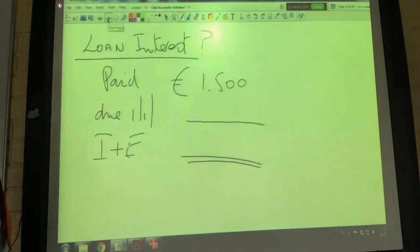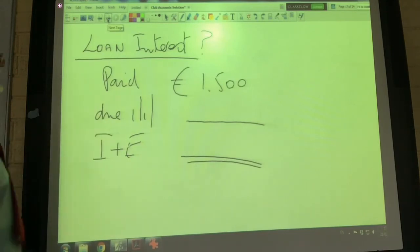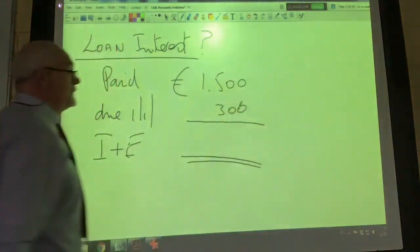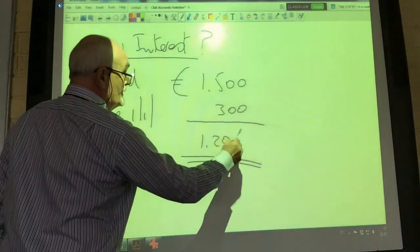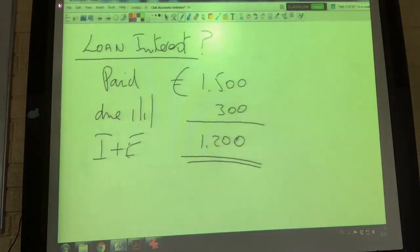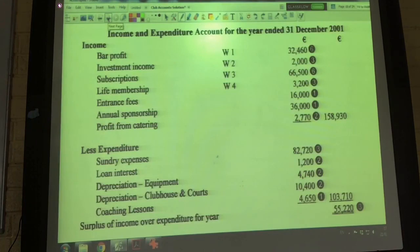Our last adjustment is one we looked at previously: loan interest. Remember we paid 1,500 euro for loan interest, which included 300 interest owed at the start of the year. So 1,200 euro is the interest we'll charge to this year's income and expenditure account. Taking all of that into account, we can now look at our income and expenditure account.